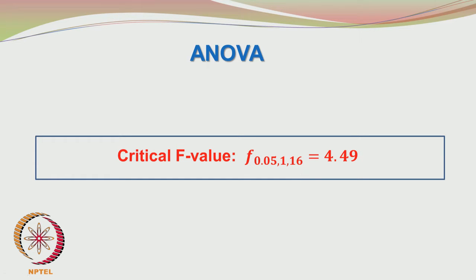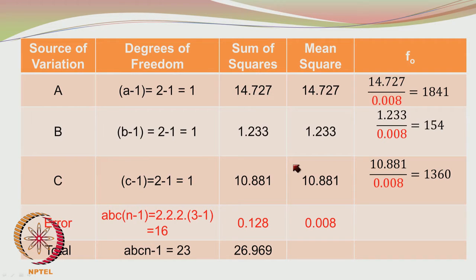For carrying out the analysis of variance, we first calculate the critical F value: F(0.05, 1, 16). Here 0.05 is the level of significance alpha, 1 is the numerator degree of freedom since each effect has 1 degree of freedom, and 16 is the denominator degrees of freedom for the error. The error degrees of freedom = A × B × C × (n-1) = 2 × 2 × 2 × (3-1) = 8 × 2 = 16. The ANOVA table is divided into source of variation, degrees of freedom, sum of squares, mean square, and F₀.